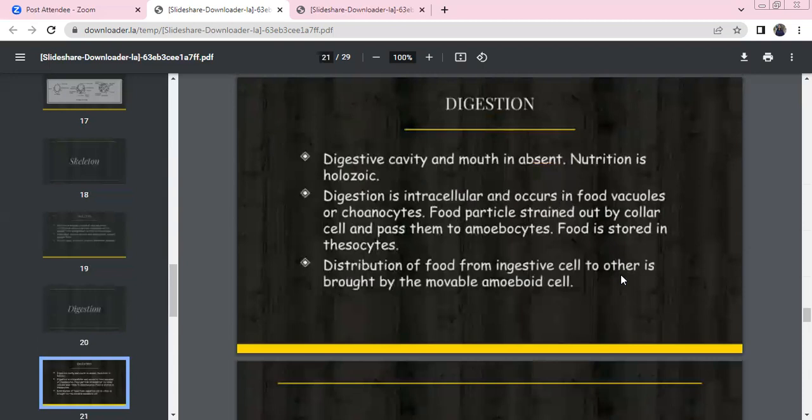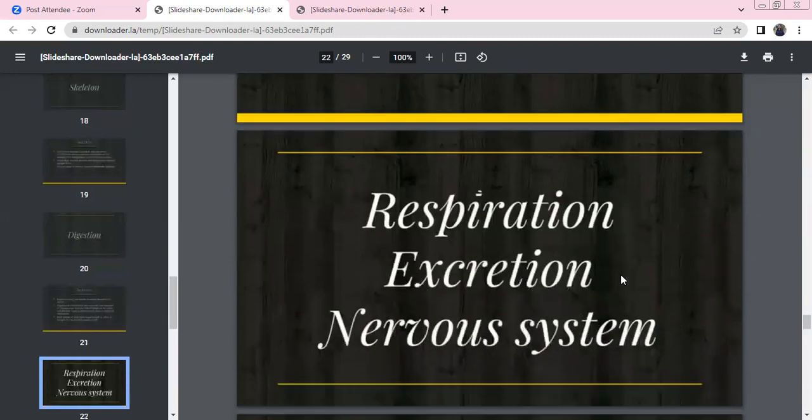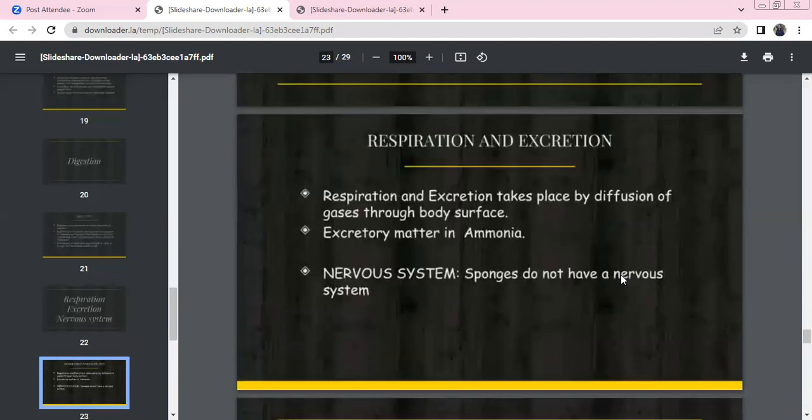Digestion: Digestive cavity and mouth are absent. Nutrition is holozoic. Digestion is intracellular and occurs in food vacuoles. Choanocytes strain food particles and pass them to amoebocytes. Food is stored in thesocytes. Distribution of food from digestive cells to others is brought by movable amoeboid cells. Respiration and excretion occur by diffusion process. The excretory product is ammonia. Sponges lack a nervous system.